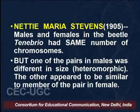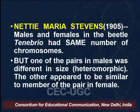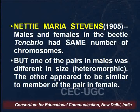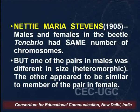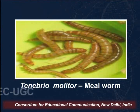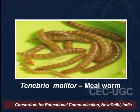Nettie Maria Stevens, another brilliant worker, found that males and females in the beetle Tenebrio had the same number of chromosomes, but one of the pairs in males was different in size — what is called heteromorphic. The other chromosome present was similar to the members of the pairs in the female. This is a photograph of Tenebrio molitor, the mealworm, where Stevens' work was conducted.